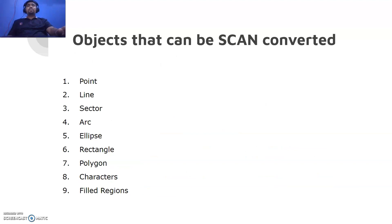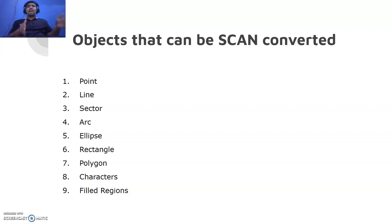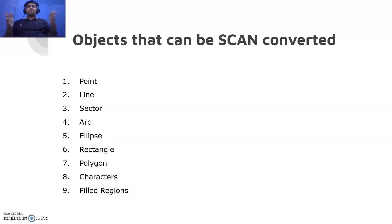The basic primitive objects that can be scan converted — meaning there are algorithms to prepare them as fast as possible — are: point, line, sector, arc, ellipse, rectangle, polygon, characters, and filled regions. All of these can be developed quickly with the help of already-developed algorithms.